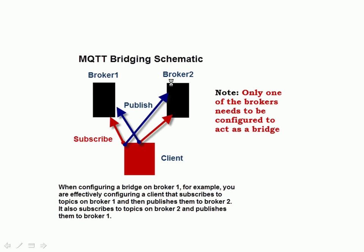Here's a diagram to illustrate that. We have two brokers, broker 1 and broker 2, and we configure one of them — we don't configure both of them to be a bridge. So let's configure broker 1 to be a bridge. That effectively creates a client on this broker. Depending on whether we configure it as a both-ways or one-way bridge, this client is going to subscribe to topics on broker 1 and also on broker 2, and also publish topics to broker 2 and to broker 1. We'll see this later in some examples.